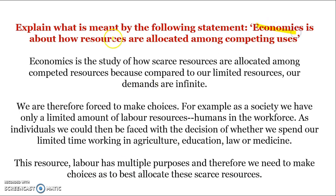Explain what is meant by the statement: 'Economics is about how resources are allocated amongst competing uses.' It's really important to use an example here. Economics is the study of how our scarce resources are allocated among competing uses — our demands are infinite relative to our limited resources, so we need to make choices. For example, as a society we have a limited amount of labour resources. We need to choose whether to allocate our labour to become a lawyer, a doctor, work in agriculture, or become a teacher. Water is another good example — it can be used for washing, agriculture, manufacturing, watering plants — it has a range of competing uses, and therefore we need to make choices about how it's best used.